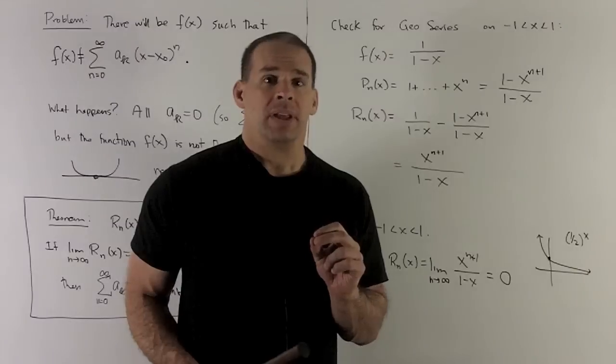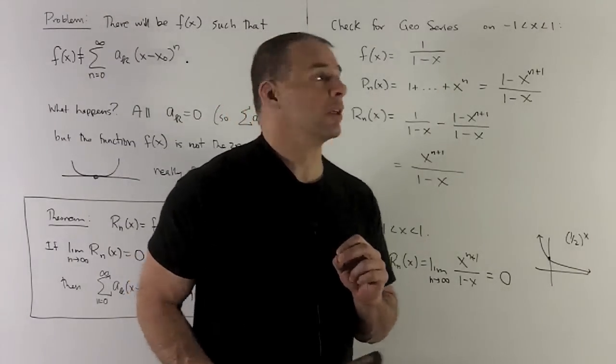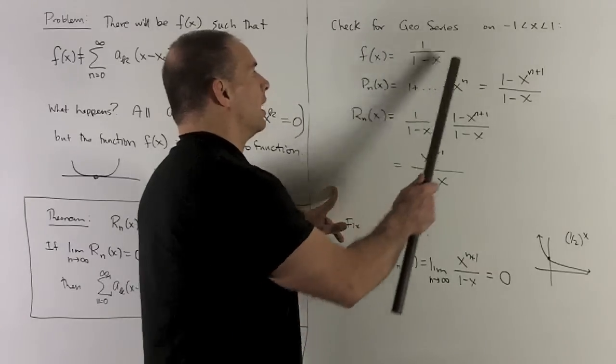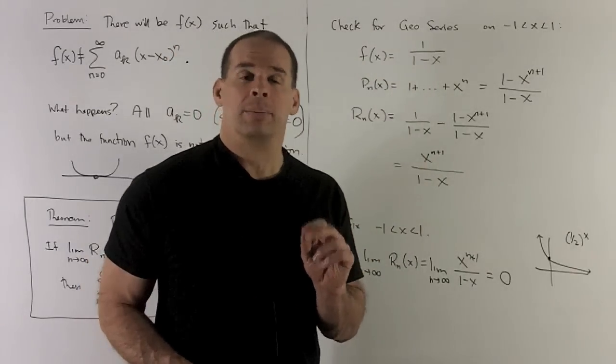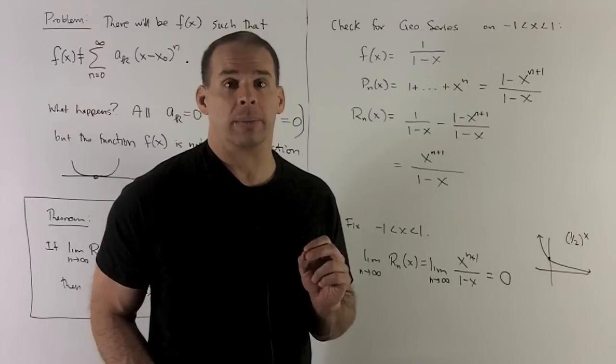The second part is going to be not only does it converge, but it converges to the function you started with. So our geometric power series is going to converge to this. Again, we already knew that, but our remainder theorem gives us confirmation. So that's how you use your remainder theorem.